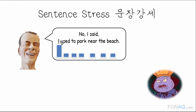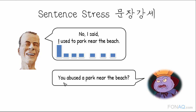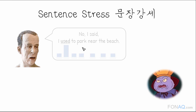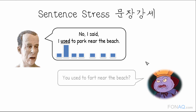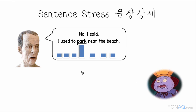This time, Sal says, 'You abused the park near the beach?' But John did not say that. So he says, 'No, I said I used to park near the beach.' Sal mishears it again and asks, 'You used to fart near the beach?' No, 'I said I used to park near the beach.' Each time, the stressed word clarifies the misheard element.